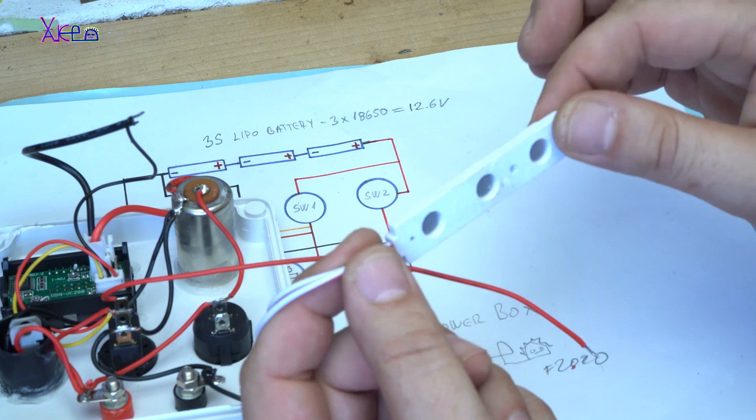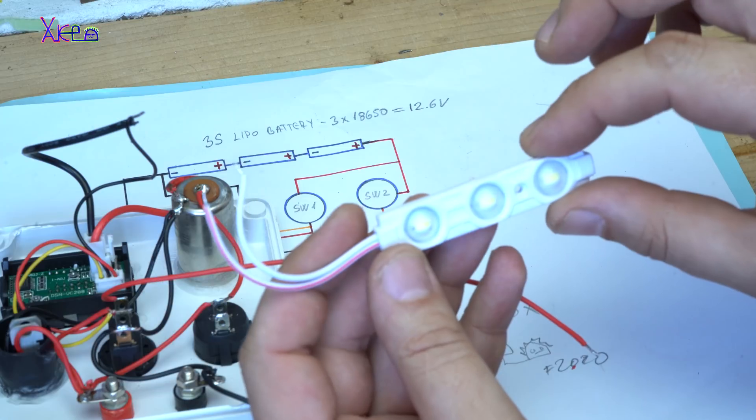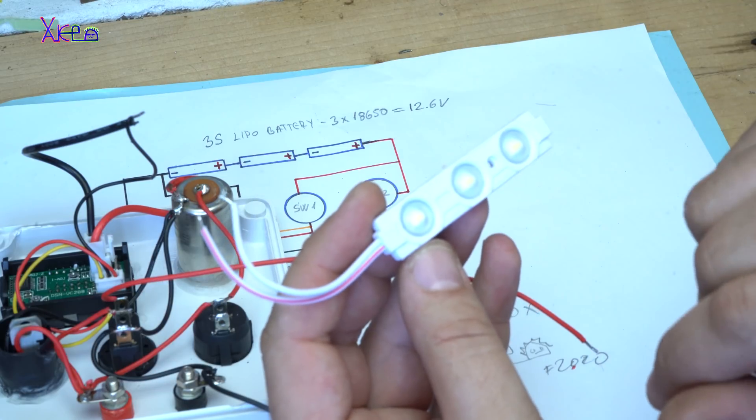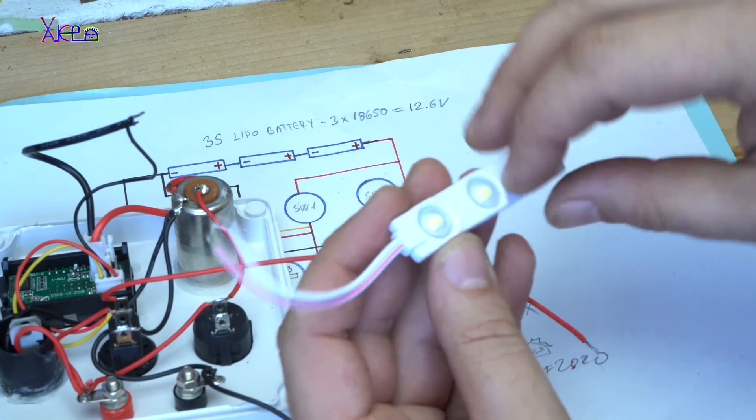This is the one - three bright LEDs. Each one is one watt, three watts of LED light that will be on the side of the box.